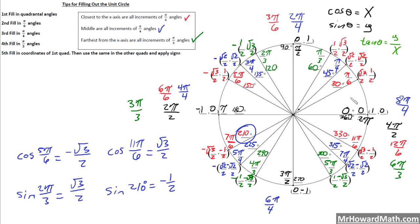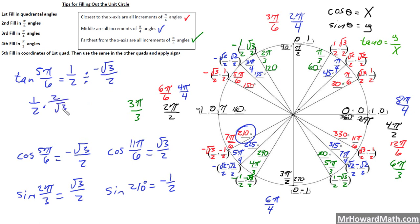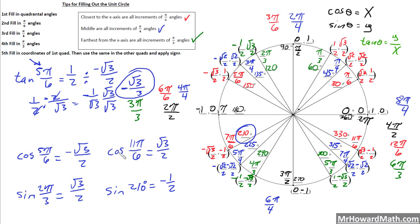For tangent, you just divide the y-coordinate by the x-coordinate. For example, tangent of 5π/6: the y-coordinate is 1/2 and the x-coordinate is negative square root of 3 over 2. Flip and multiply: 1/2 times 2 over square root of 3, which is negative. The 2s cancel, giving negative 1 over square root of 3. After rationalizing, the exact value is negative square root of 3 over 3. Tangent is the most difficult because you have to divide the two components, but that's how you use the unit circle to get exact trig values of special angles.